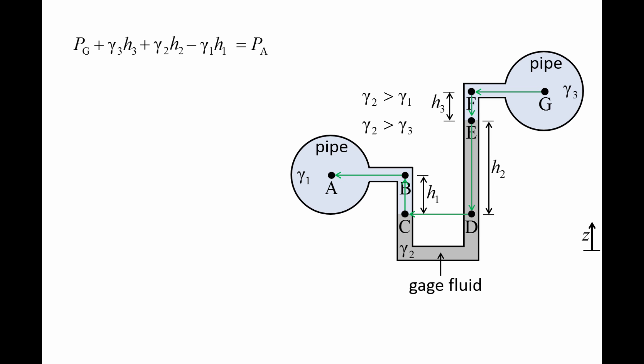Usually it will be easy to look up the specific weights gamma 1, gamma 2, and gamma 3 in a fluids textbook or elsewhere, and it would be easy to measure the heights H1, H2, and H3. If that is indeed the case, we have one equation but two unknowns — the pressure at point A and the pressure at point G. So while we cannot determine the pressure in both devices, by rearranging the equation we can determine the pressure difference between the two devices — that is, we can determine PA minus PG. And fortunately, in fluid mechanics, often only pressure differences are important.